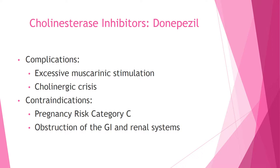Complications of cholinesterase inhibitors include excessive muscarinic stimulation: increased GI motility and GI secretions, diaphoresis, increased salivation, bradycardia, urinary urgency, miosis, and spasm of accommodation — that is, focusing of the lens for near vision. The increase in GI motility and secretions may put patients at greater risk for developing heartburn or GERD.